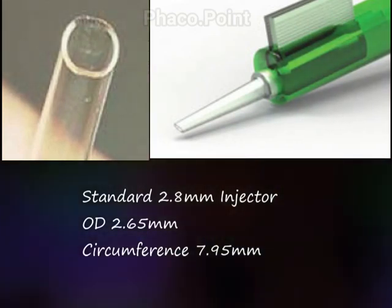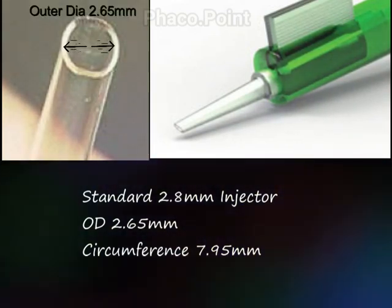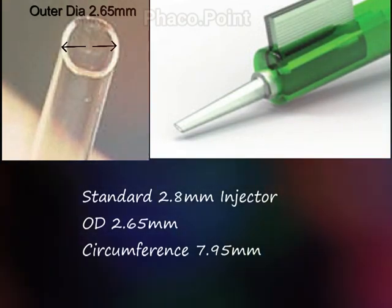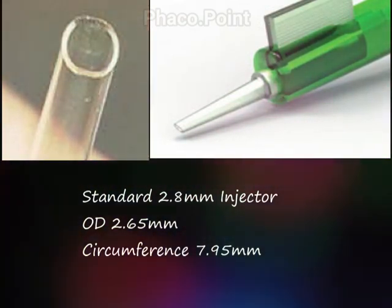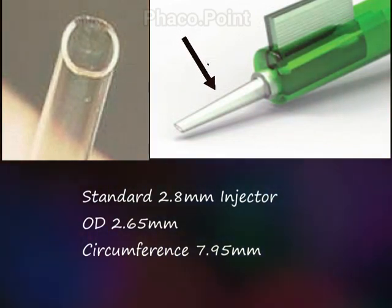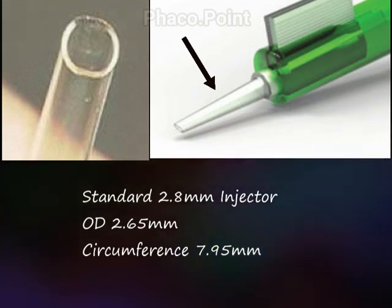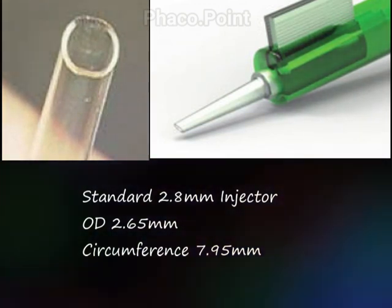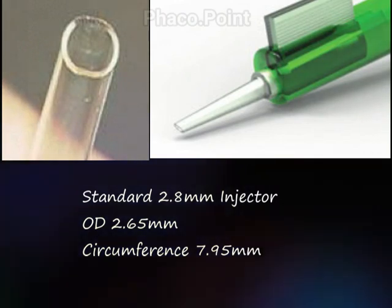A standard 2.8 mm injector nozzle tip has an outer diameter of 2.65 mm with a circumference of 7.95 mm. In addition, the cone-like configuration of the nozzle means that the more you push the nozzle within the incision, the greater will be the distortion — which is the reason why you saw such a gape of the incision.